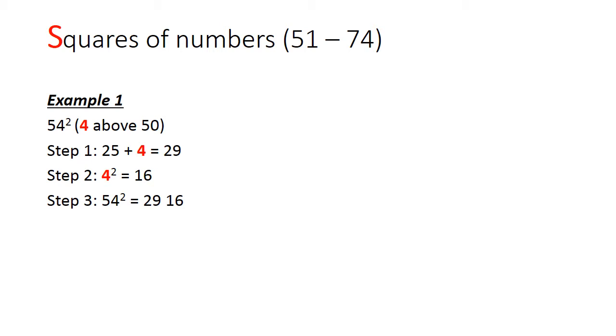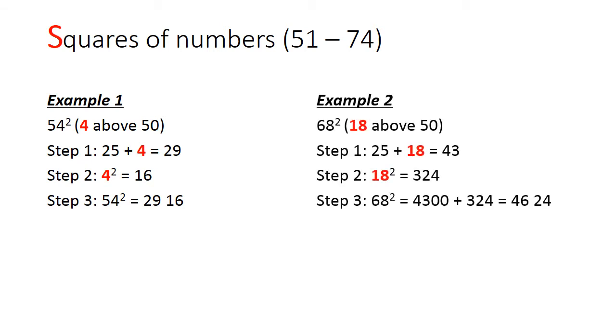In the second example of 68 squared, 68 is 18 above 50. So 18 is the key. We add 18 to 25 again to get 43, and square 18 to get 324. This is from memory. And put the two numbers together. Since 324 is 3 digits, we have to carry the 3 over to the hundredths place, so that 43 becomes 46, and we get 4624.